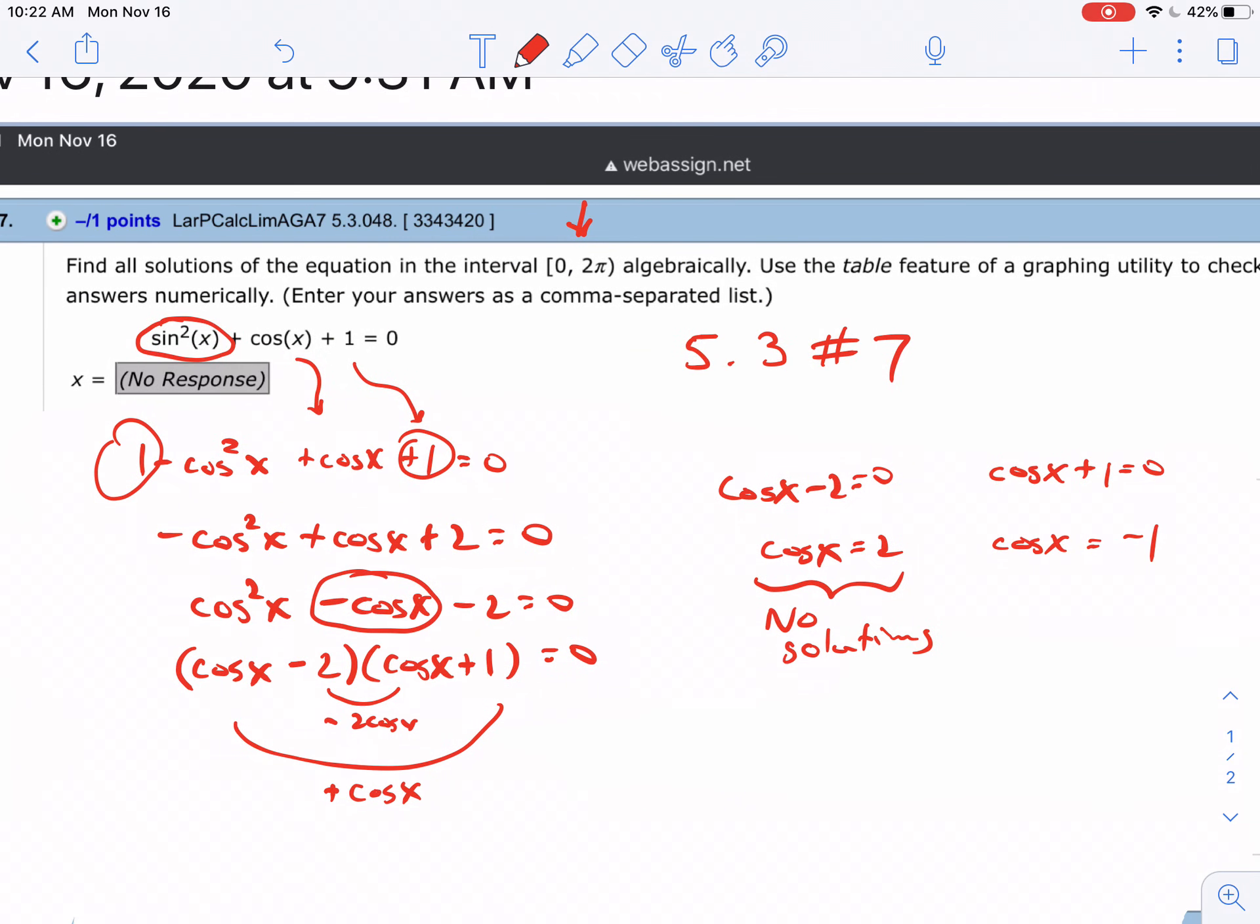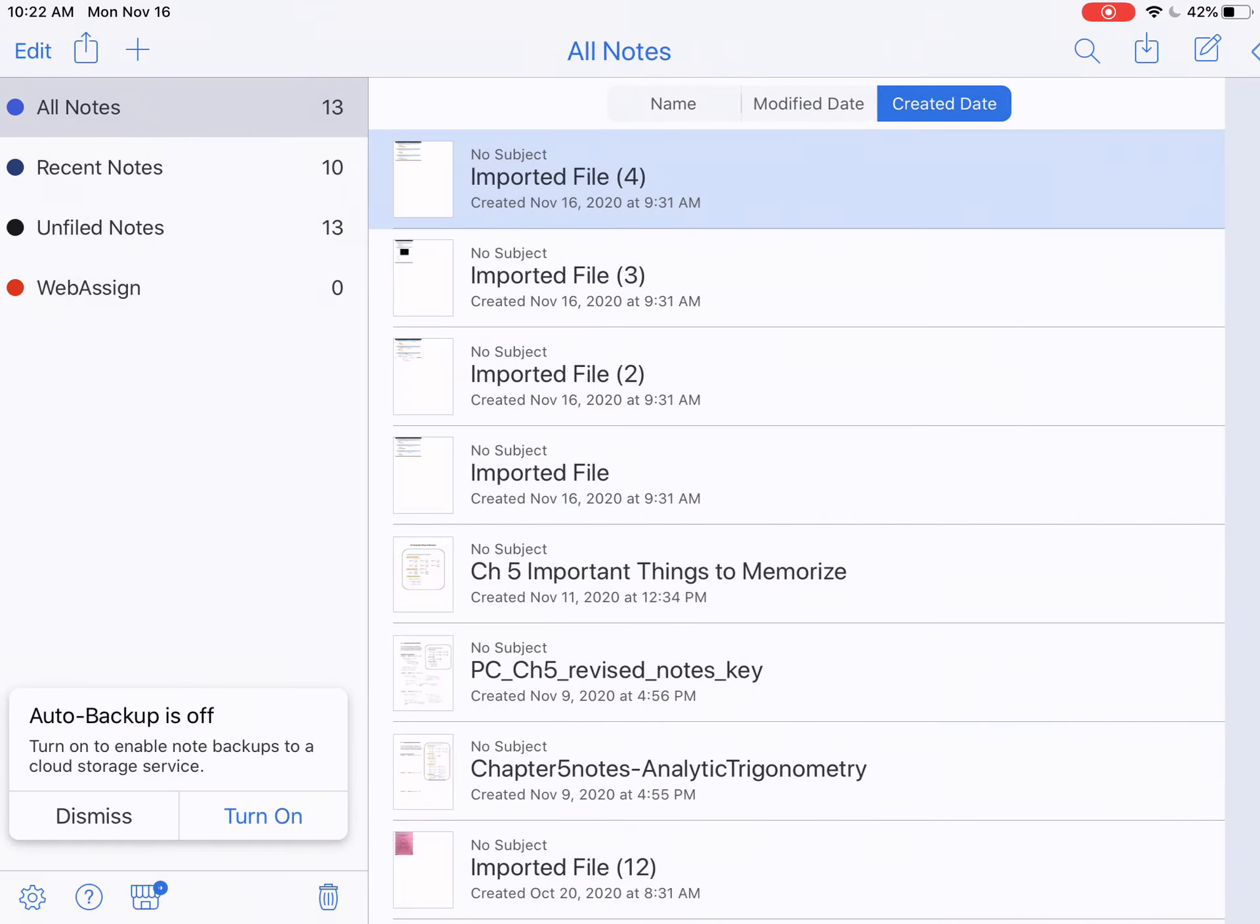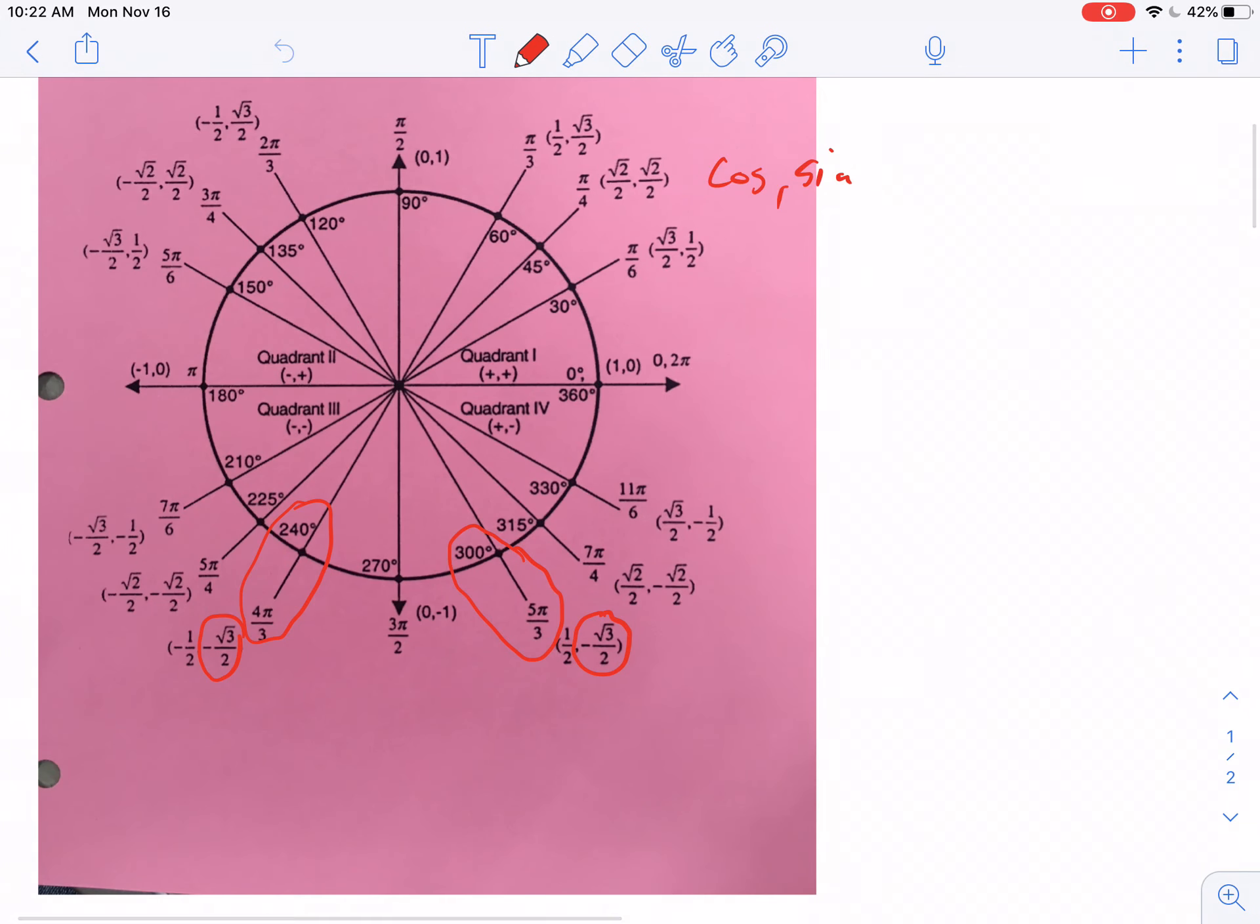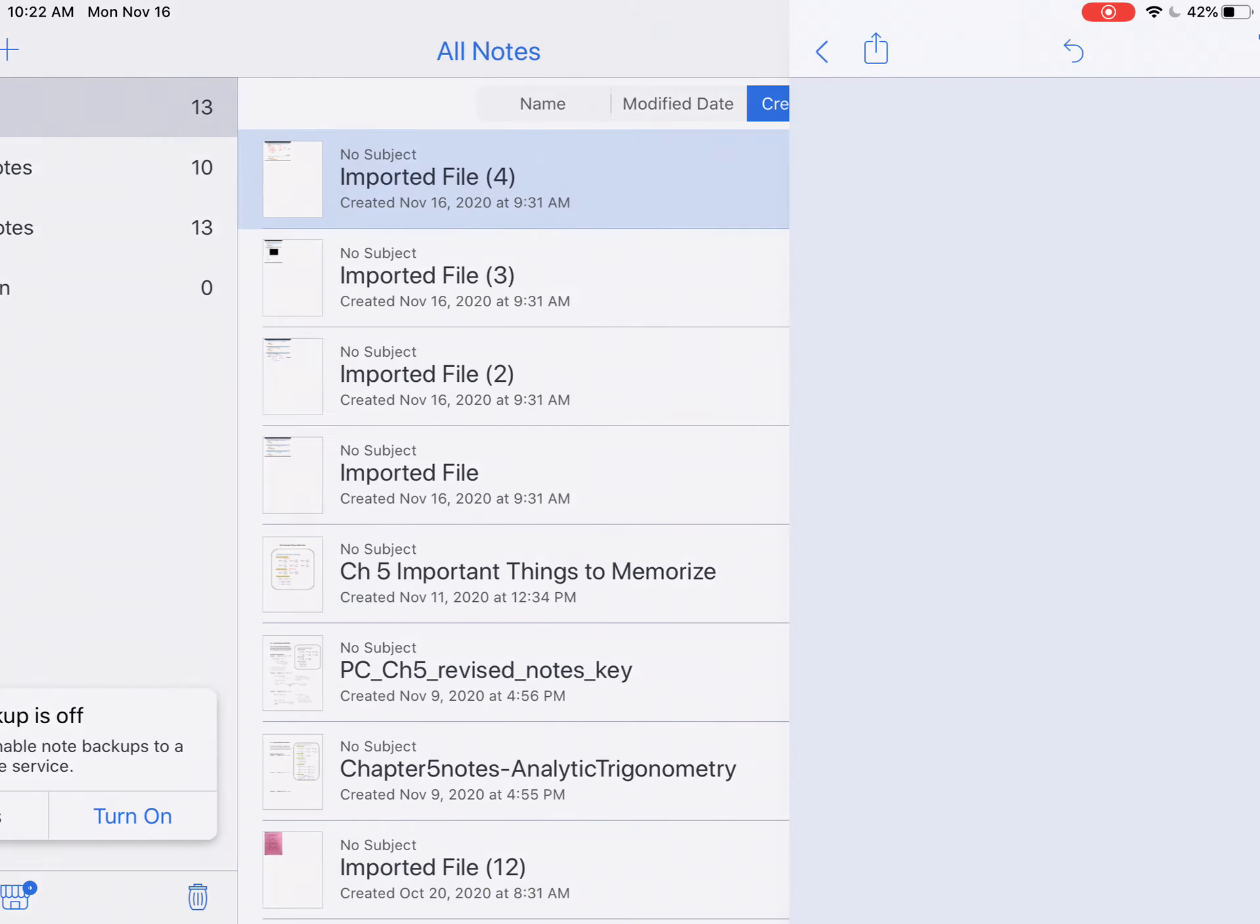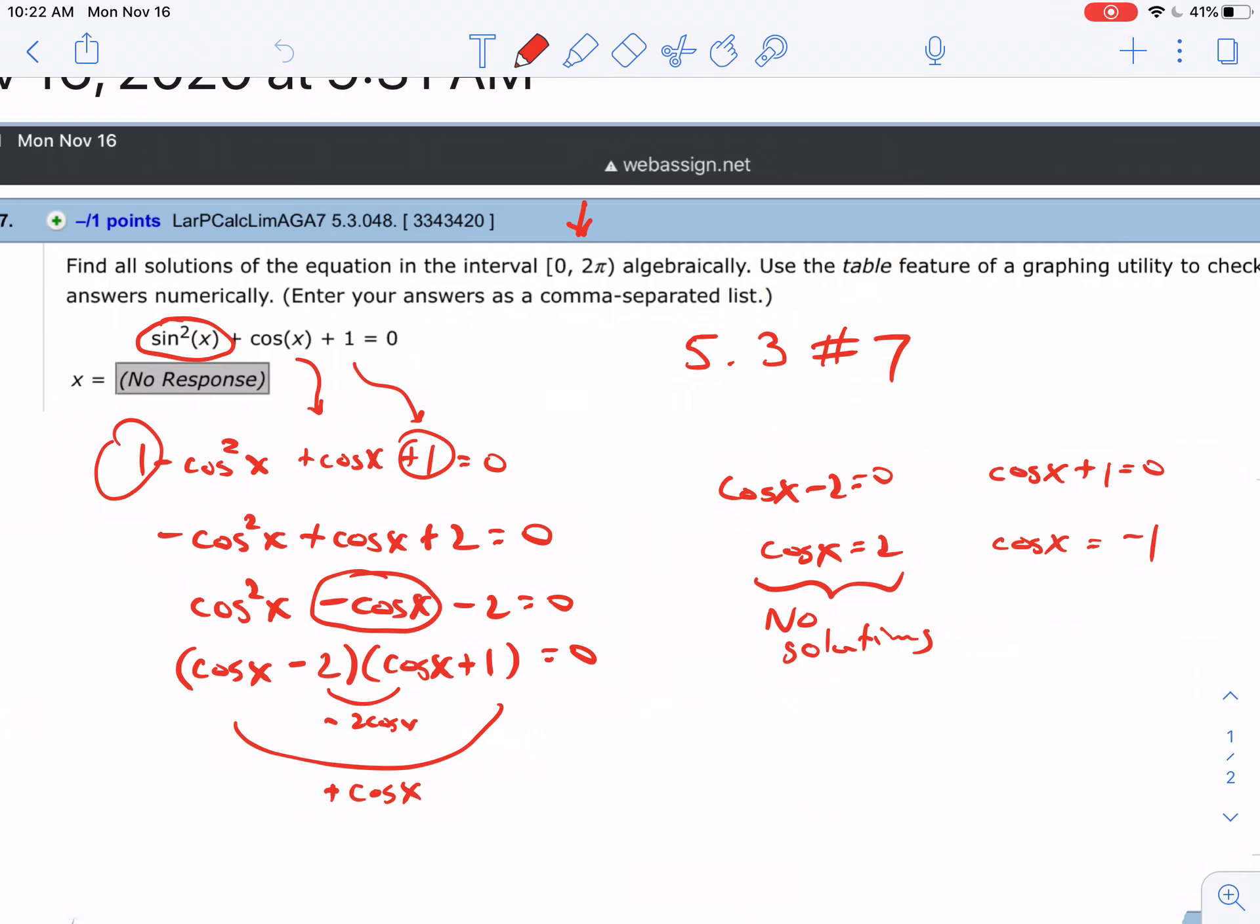When is the cosine negative 1? That's over on the left hand side of the unit circle. So look at your unit circle. What's the angle on the left hand side? Go ahead and type in the radian for that one. Make sure you do the radian measure for where cosine is negative 1.